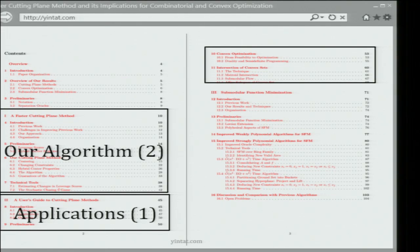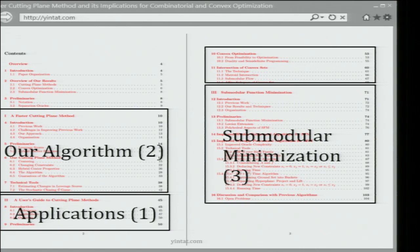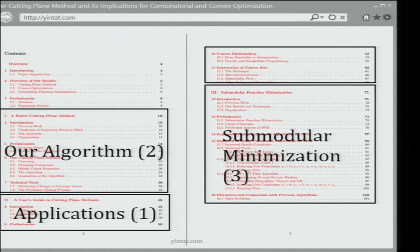First I'll talk about the application, and then I will talk about how we get our result. At the end, I will talk about how to use our result to minimize the submodular function. Our title is called Faster Cutting Plane Method, and here the cutting plane method is not the usual cutting plane method to solve integer programming — I'm referring to a type of algorithm used to solve polynomial time problems. People in certain areas of optimization call this the localization method instead of cutting plane method.